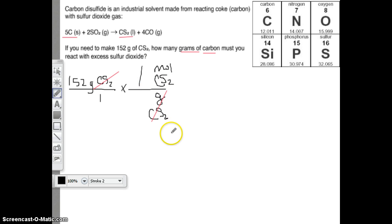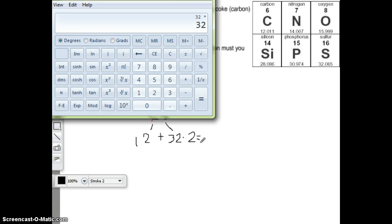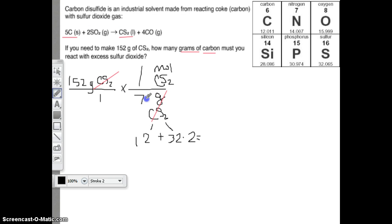In one mole, how many grams of CS2 are there? There's one carbon, each carbon weighs 12. And how much does each sulfur weigh? It's 32, plus 32, but there's two of them, so times 2. 32 times 2 plus 12 gives us 76 grams of CS2 for every mole. What has to go on the bottom of my next fraction? Moles of CS2.